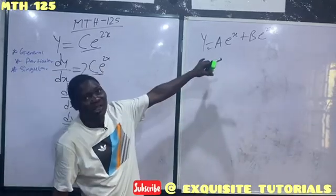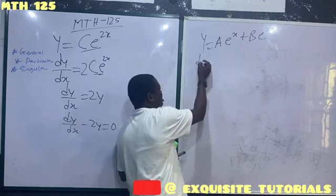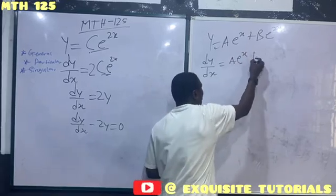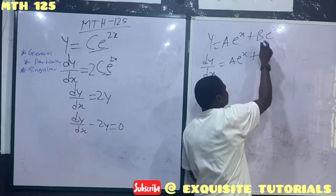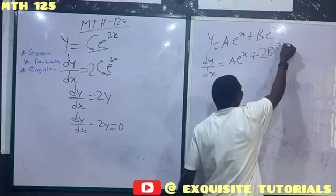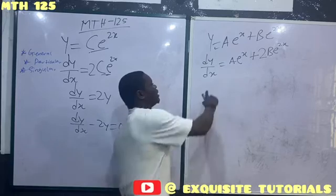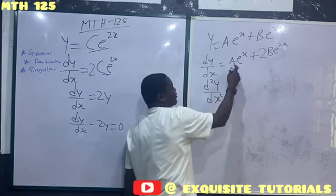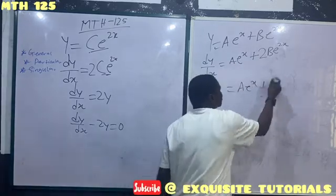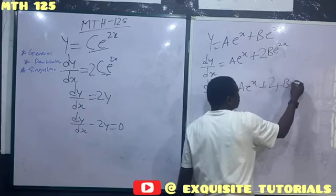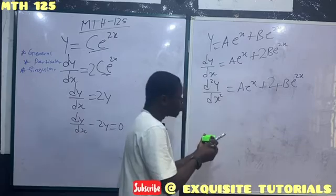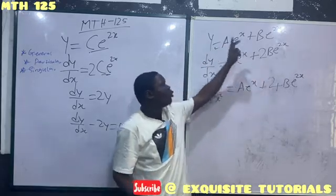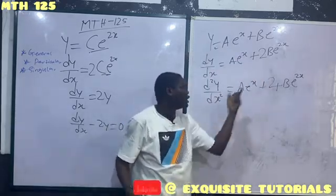There are two arbitrary constants here, a and b, so we will be differentiating twice to eliminate them. Differentiating once: dy/dx equals a·e^x plus 2b·e^(2x). Differentiating a second time: d²y/dx² equals a·e^x plus 4b·e^(2x). We said the aim is to remove a and b. If I solve these equations simultaneously to obtain a and b and substitute back, that will give my differential equation.